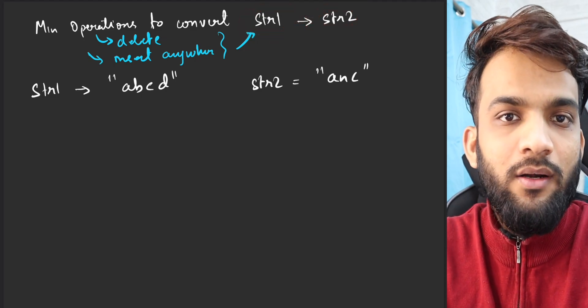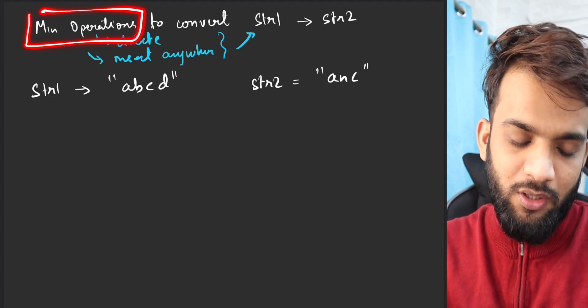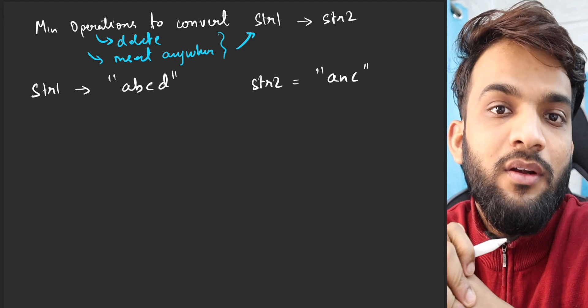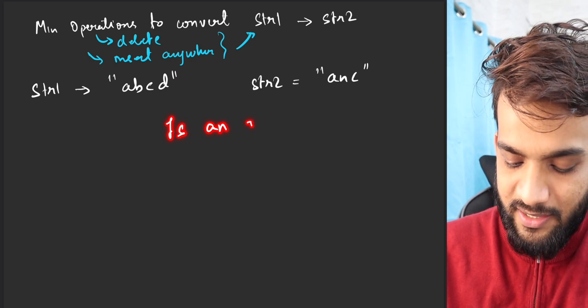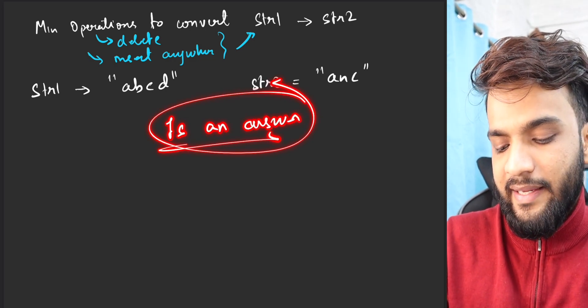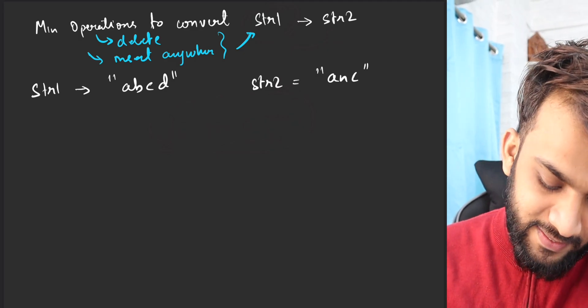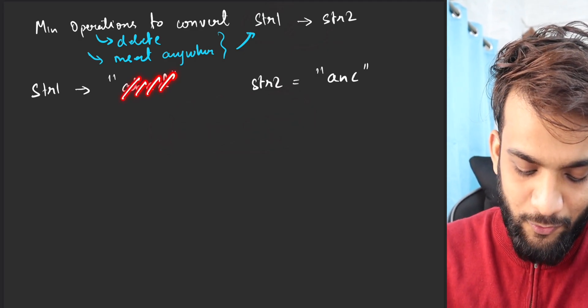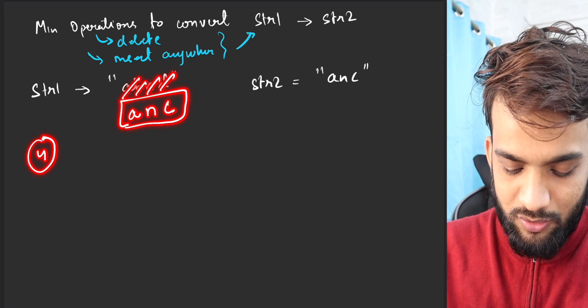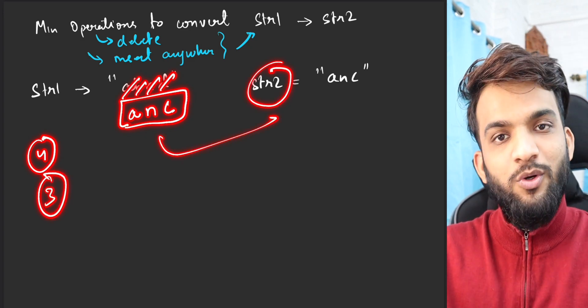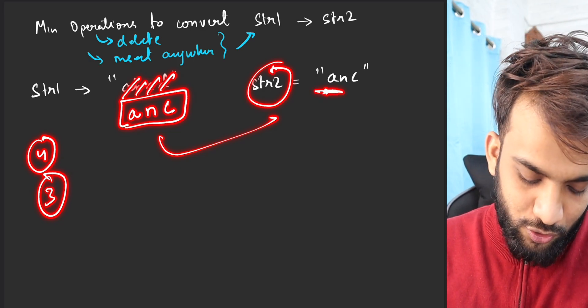The number of operations can be many, but you have to tell me what is the minimum possible number of operations. Is an answer always possible? Can you convert string one to string two always? The answer is yes. How can I say? Let's delete everything - that's four operations, making an empty string. Then insert A and C - that's three more operations. So you've got the string S2. Delete everything and insert every character of string two - seven operations is what you'll take.